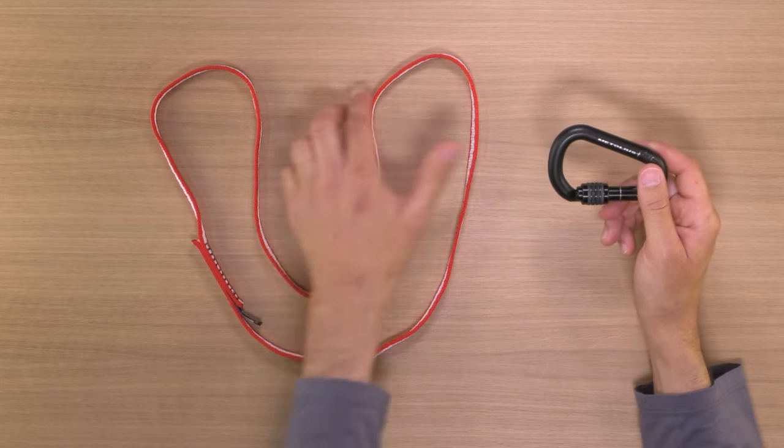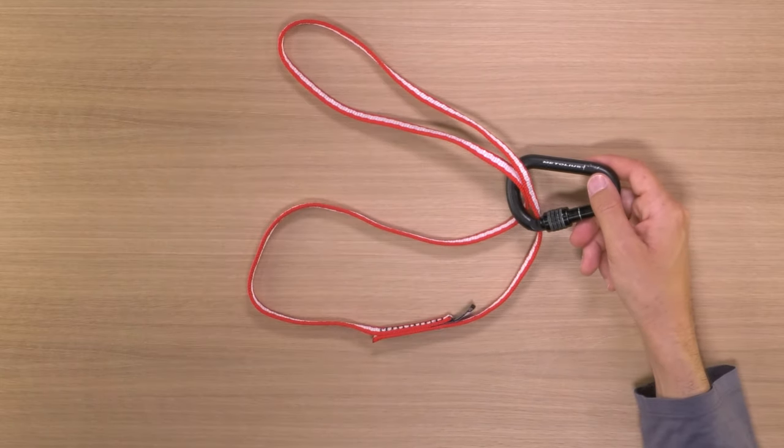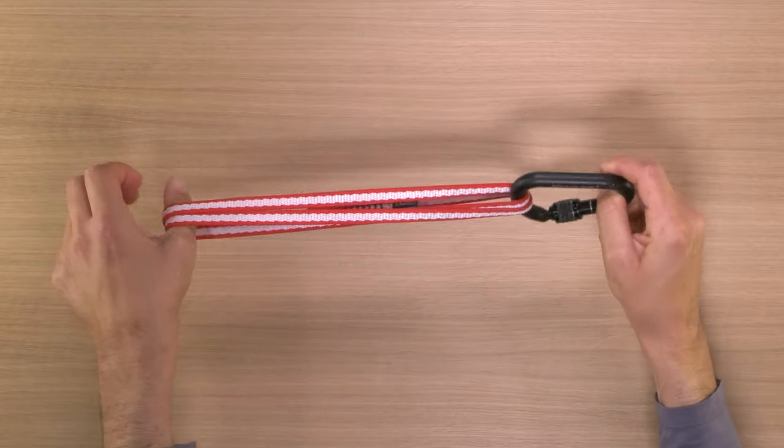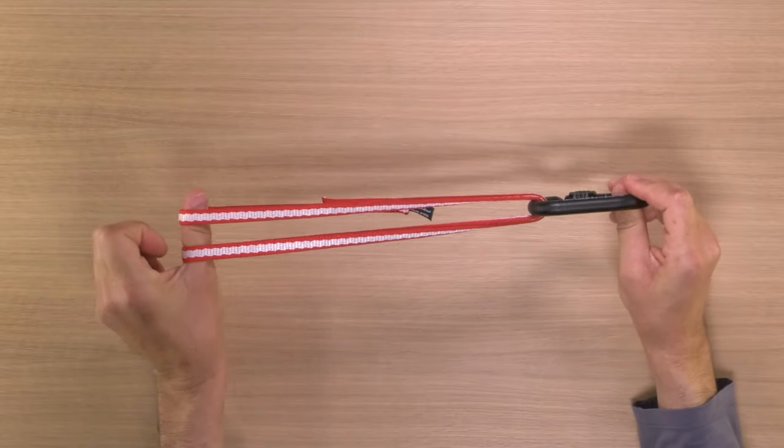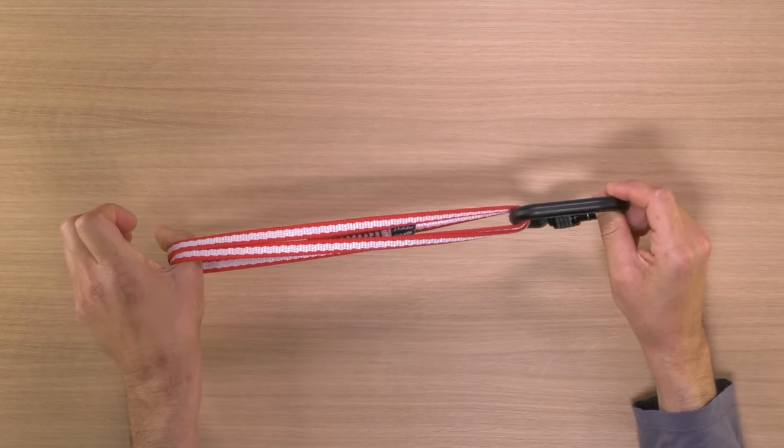A basket hitch is very simple. You take a loop, such as a shoulder sling, wrap it around something, such as this carabiner, or with a larger piece of material you could wrap around a tree, and grab both ends. There's your basket hitch. This is great for quickly extending an anchor or your belay device.